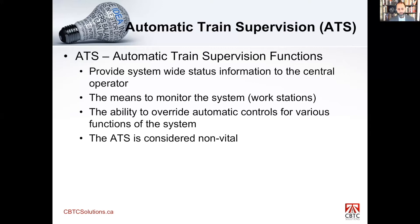ATS — automatic training supervision. This is your center control, the eyes and ears of your entire system. The ATS sits in center control, where the operator sits in front of the workstation and can see the entire system — the entire line, all of the stations, all the trains along the line, the routes, where the trains are and what they're doing. All trains and all wayside equipment are sending information to the ATS and the operators in central control.